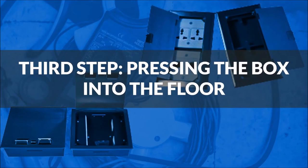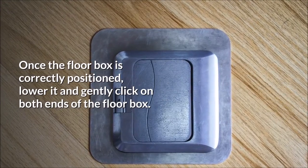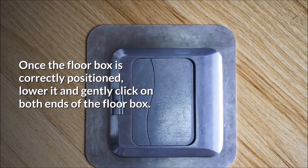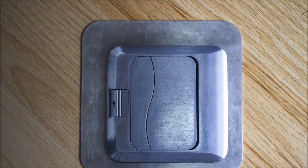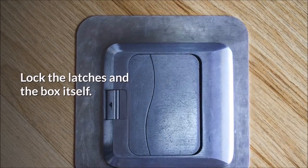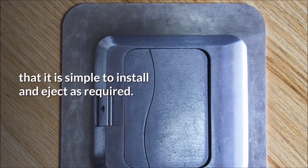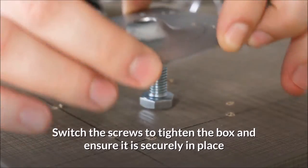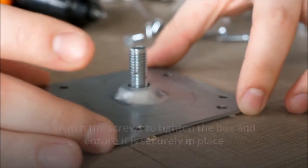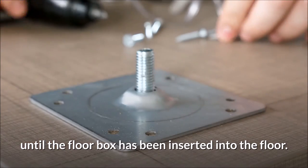Third step, pressing the box into the floor. Once the floor box is correctly positioned, lower it and gently click on both ends of the floor box. Lock the latches and the box itself. Securing the latches on each side of the floor box ensures that it is simple to install and eject as required. Switch the screws to tighten the box and ensure it is securely in place until the floor box has been inserted into the floor.